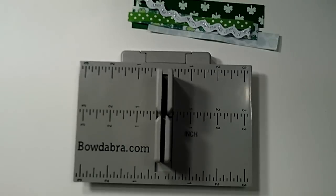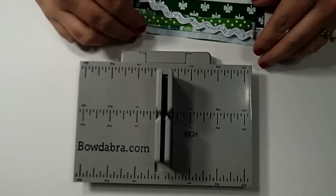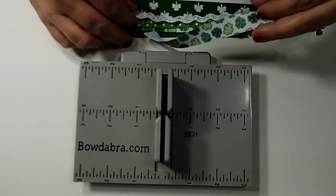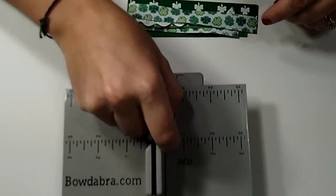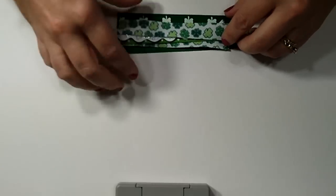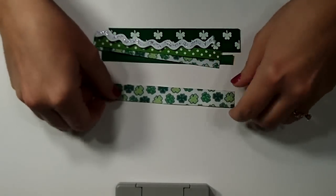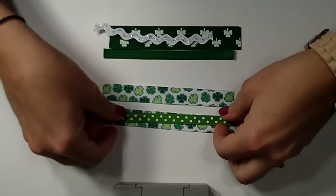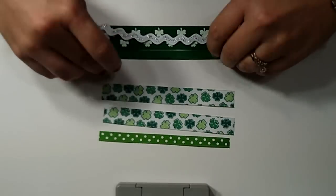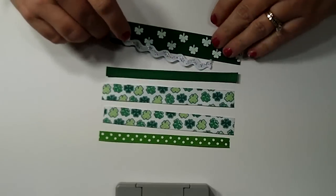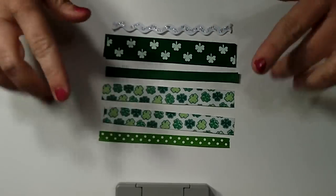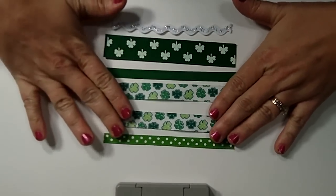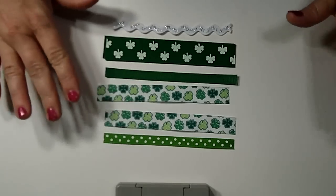So what you're going to need for this one is your Bowdabra, and this is the mini Bowdabra by the way. Then you're going to have some five-inch strips of ribbon. As you can see, I have different widths and different prints and even some rickrack here. So you can mix and match all different kinds of ribbon to make this bow a lot of fun.